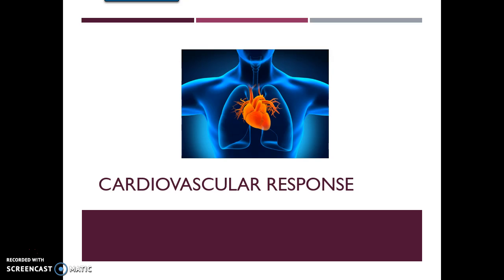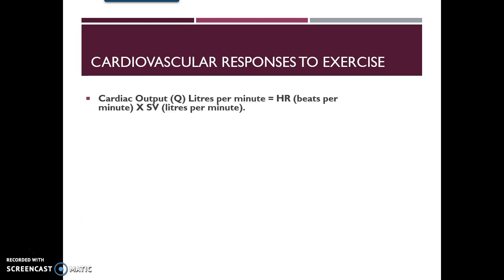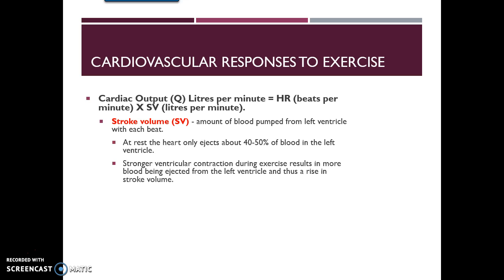The cardiovascular system is responsible for transporting oxygen around the body. We see an increase in cardiac output, which is the total amount of blood pumped per minute — expressed as heart rate (beats per minute) multiplied by stroke volume (blood ejected from the left ventricle per beat). At rest, the heart only ejects about 40 to 50% of the blood in the left ventricle. During exercise, a stronger ventricular contraction results in more blood being ejected, causing the rise in stroke volume.